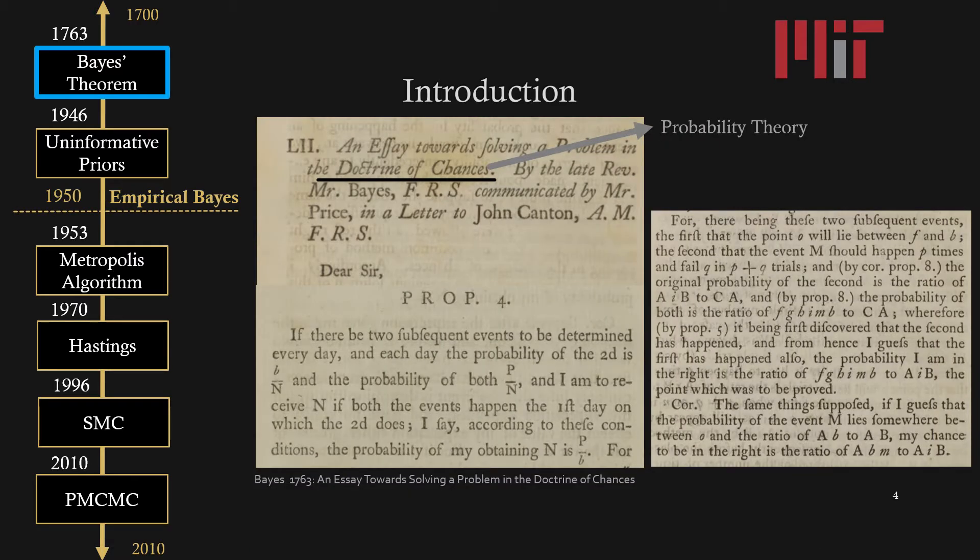Starting back in 1763, the Bayes theorem was published by Richard Price two years after Bayes' death. It was published in the Royal Society and what's interesting about this is since religion and research was intertwined at the time, Price actually claimed that Bayes theorem proves that God exists. This Bayes theorem written in an essay towards solving a problem in the doctrine of chances is not the one we know today. It instead is a specific example where a uniform prior is used for a binomial parameter.